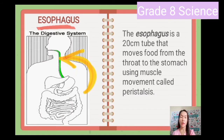The esophagus is a 20-centimeter tube that moves food from the throat to the stomach using muscle movement called peristalsis.